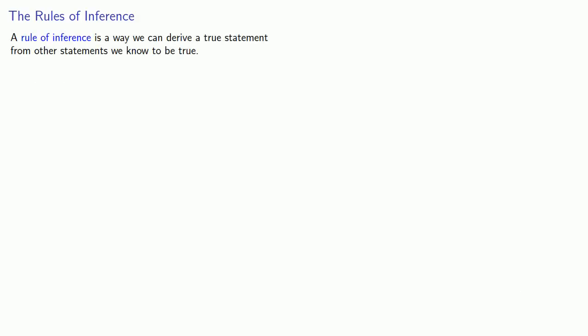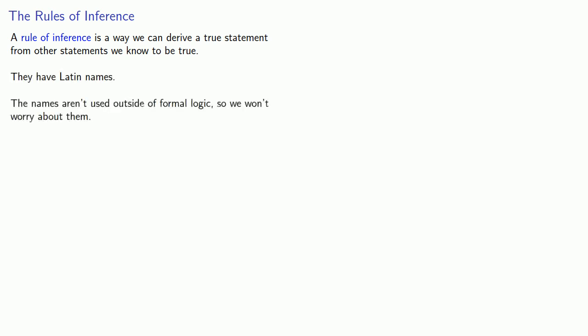A rule of inference is a way we can derive a true statement from other statements we know to be true. They have Latin names. The names aren't used outside of formal logic, so we won't worry about them, except perhaps as interesting pieces of trivia.